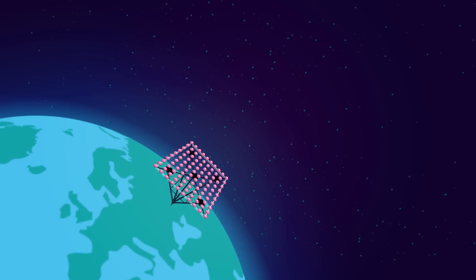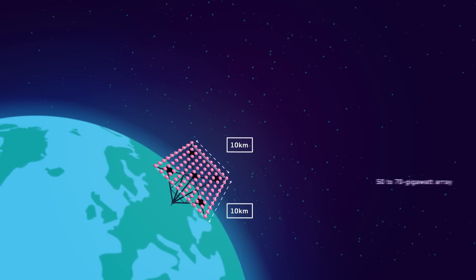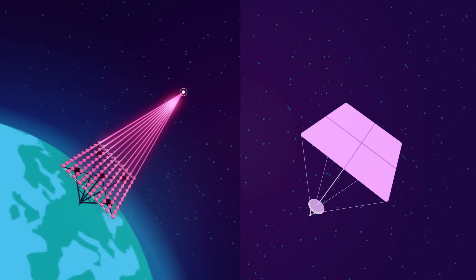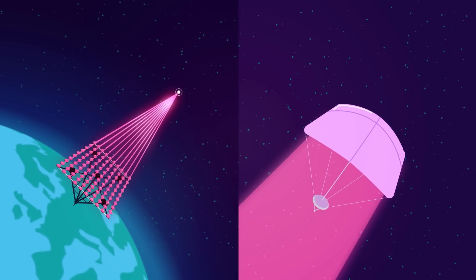Eventually, the scientists want to build a 50 to 70 gigawatt laser array that is 10 kilometers by 10 kilometers in size. Launched into orbit around Earth, the array could shoot light at a very small spacecraft, about the size of a saltine cracker and the weight of a paperclip, that's equipped with a one-meter-wide sail.